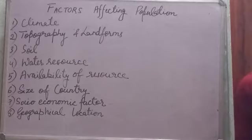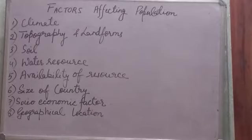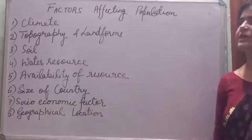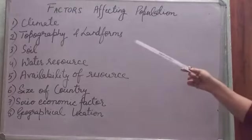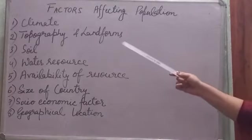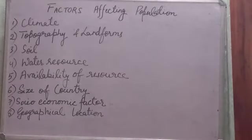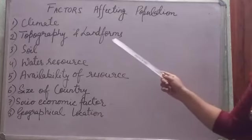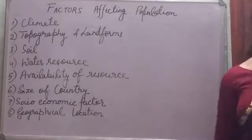Topography and landforms: rugged mountain regions or rugged topography are not suitable for large populations. Landforms that are plain — plain areas — are densely populated regions, and they are agriculturally well developed.